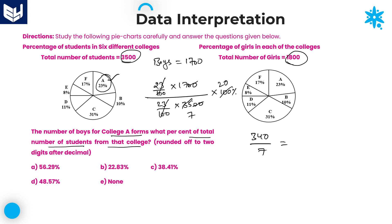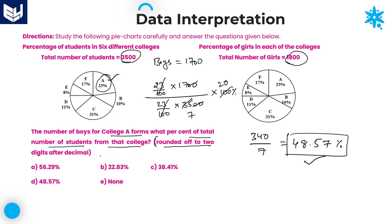Calculating 340 ÷ 7: 7×4=28, remainder 60; 7×8=56, remainder 40; 7×5=35, remainder 50; 7×7=49. Computing up to 2 decimal places gives 48.57. Therefore the required answer is 48.57%. If the question asks for an approximate value, you can directly keep the answer as 48%.